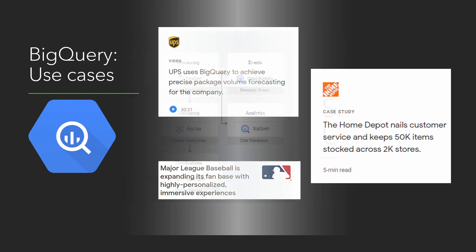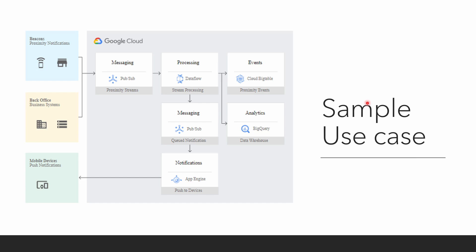Let's look at a sample use case from the Google documentation: an ad tech scenario that uses Cloud Bigtable as a database. This use case has both real-time events that you collect and store in Bigtable, and also uses BigQuery for analytics. This is the perfect example showing the difference between Bigtable and BigQuery — Bigtable for live data storage and BigQuery for analytical processing.